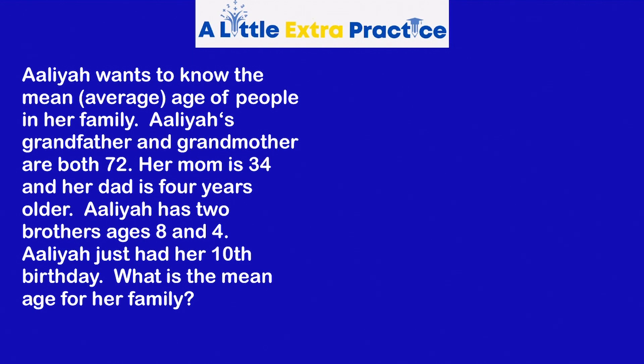Let's take a look at this problem. A lot of key information in here. Aaliyah's grandfather and grandmother are both 72. Her mom is 34 and her dad is four years older. So we have 34 plus 38. Aaliyah has two brothers, ages eight and four. And Aaliyah just had her 10th birthday.